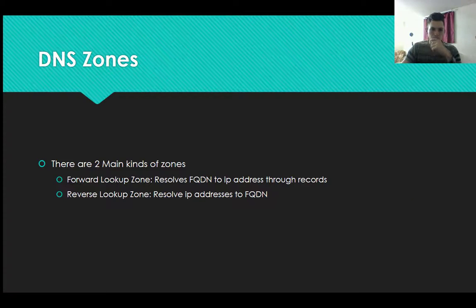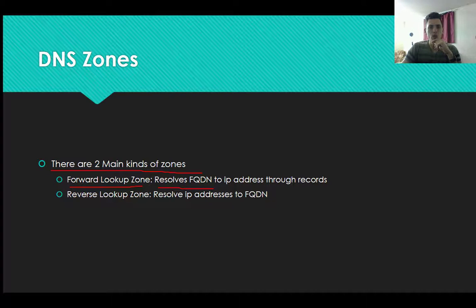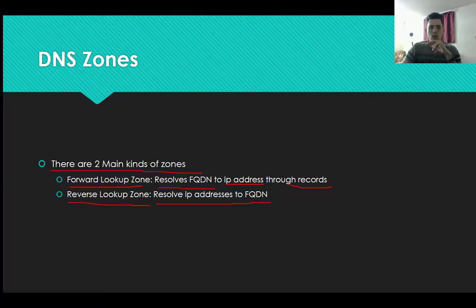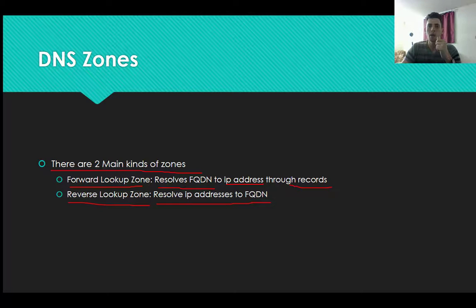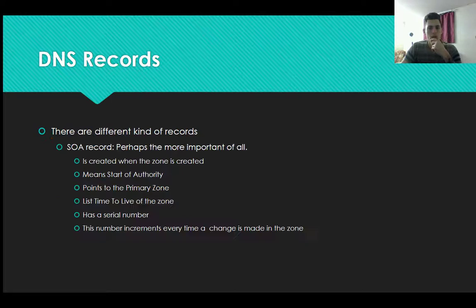Now we're going to see what the DNS zones are. There are two main kinds of zones. The first is a forward lookup zone — it resolves fully qualified domain names into an IP address through records like A records. The second is a reverse lookup zone — it resolves IPs into a fully qualified domain name. So if you write 10.10.10.10, it will give you back www.google.com, for example.